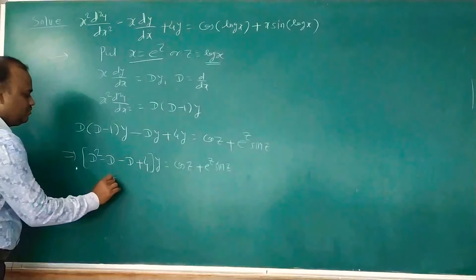The solution of this differential equation is y = CF + PI. Since this is now a linear differential equation with constant coefficients, up to this step is the new part; after this we find the complementary function and particular integral.